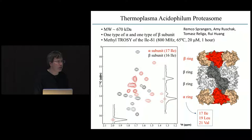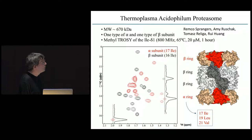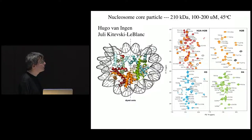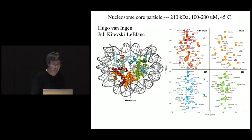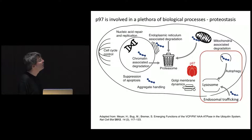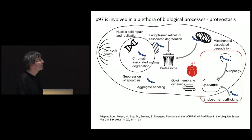We can apply this methodology to a variety of different protein systems. This application is now over 12 or 13 years old — we're applying this technology to the proteasome, which is 670 kilodaltons. We can also apply it to the nucleosome, where we have methyl groups in each of the four different histones, and we've been able to assign all of the methyls in the histones, which serve as reporters of molecular structure, dynamics, and epigenetic modifications. But what I want to speak to you about today is a protein called P97.